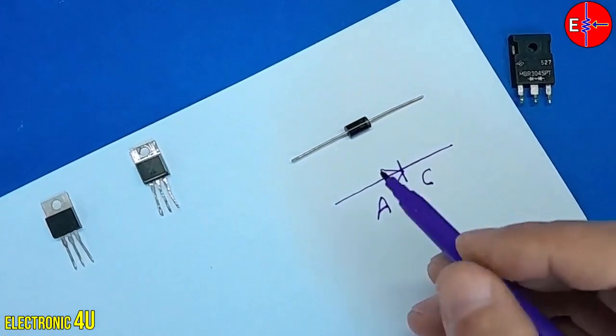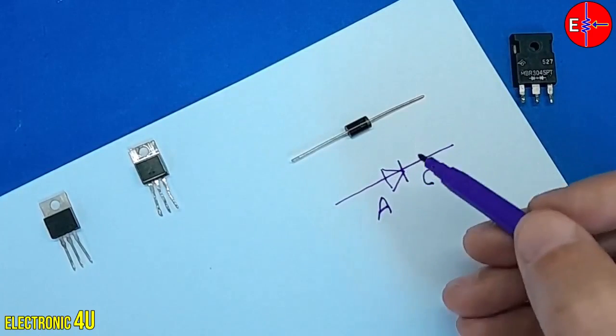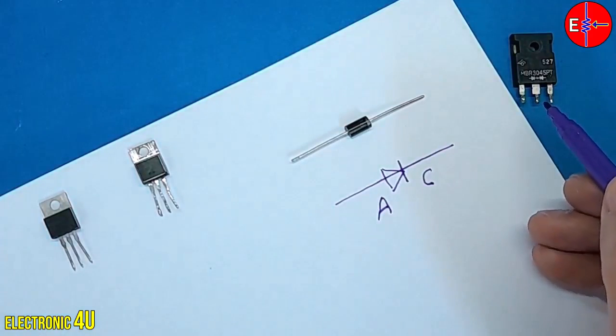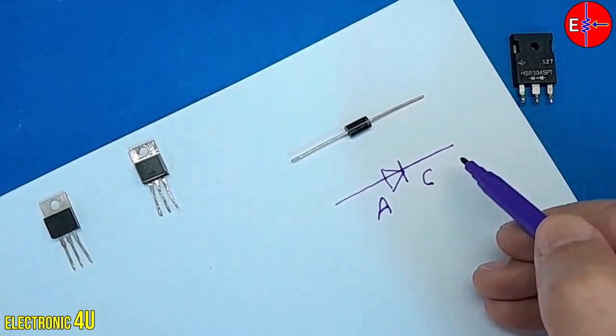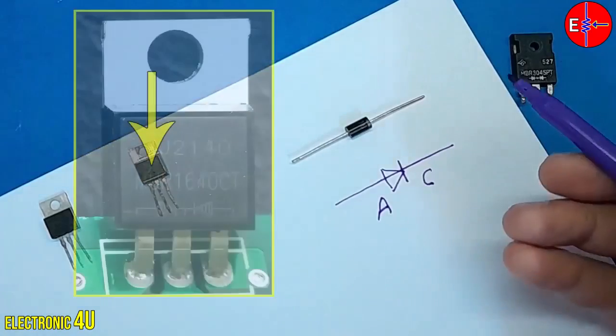But this type of diodes are not used in all circuits. The diodes may be in the form of three bases. That is, two diodes are placed inside it. Numbers and letters are written on these diodes. For example,